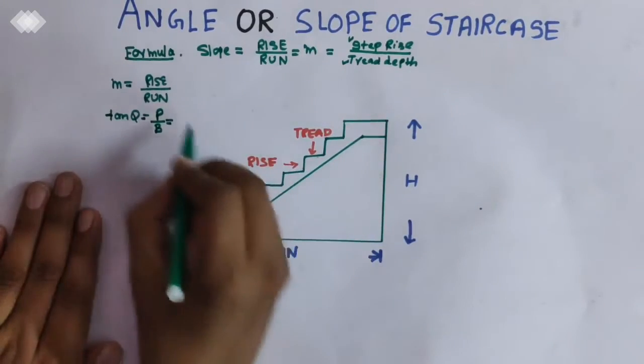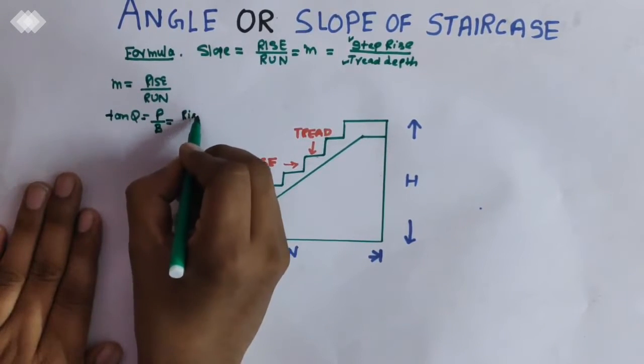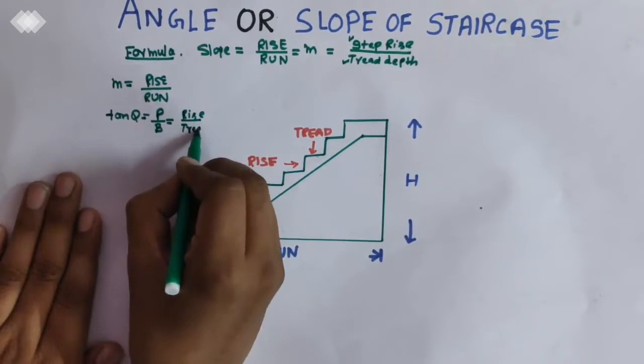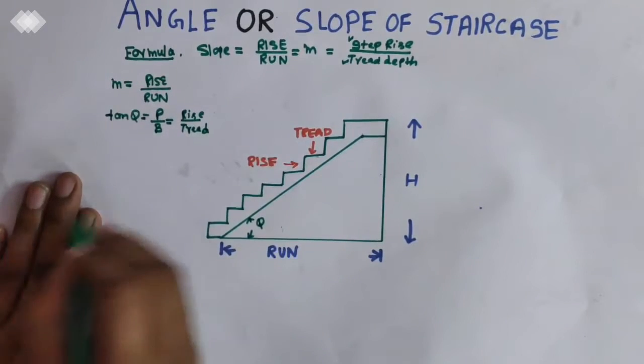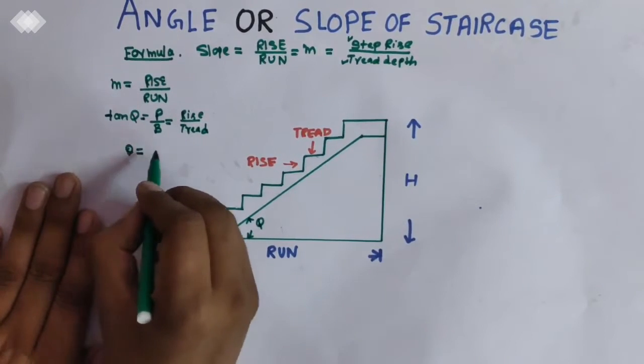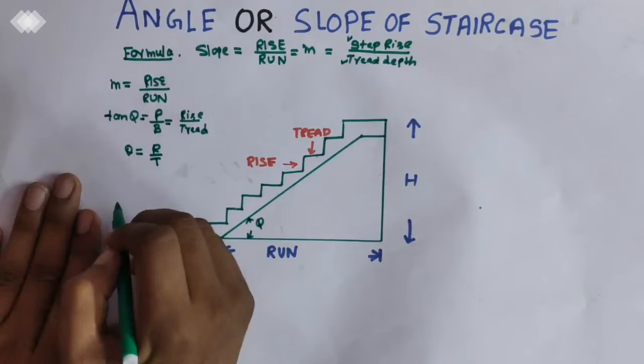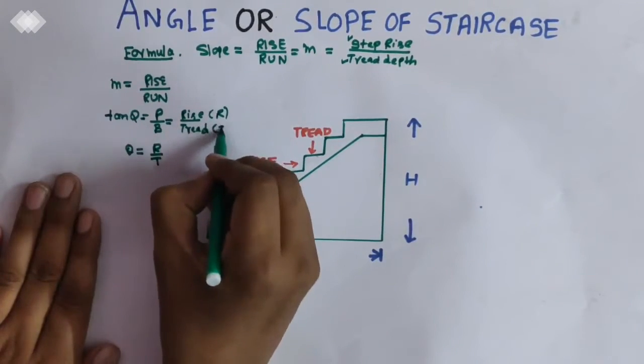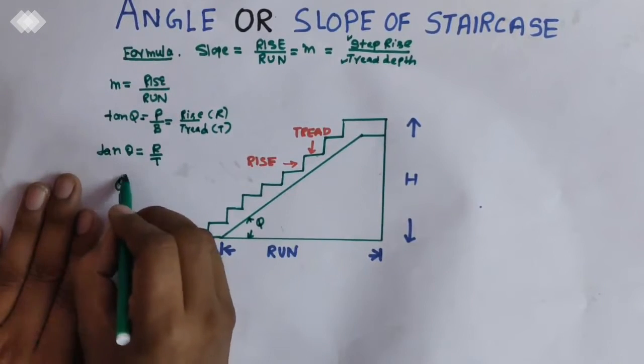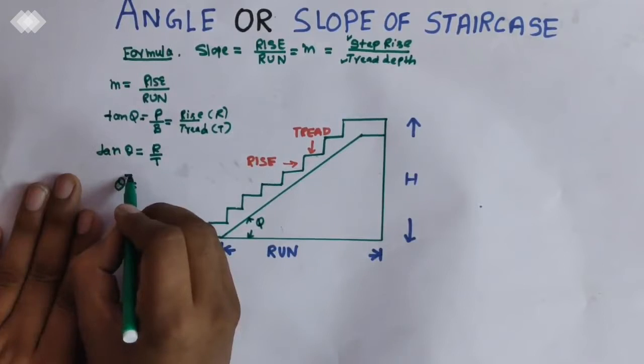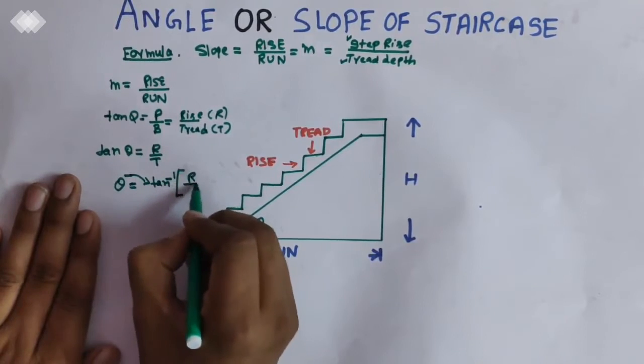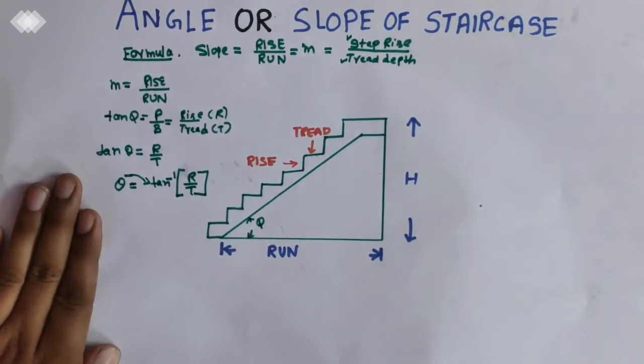So perpendicular is rise and by breadth or you can say depth is tread. So theta is equals to r by t. This is tan theta. Now when you have to calculate the theta, this tan will come here and it will become the inverse. Theta equals tan inverse r by t. So this is the formula for calculating the angle of slope staircase.